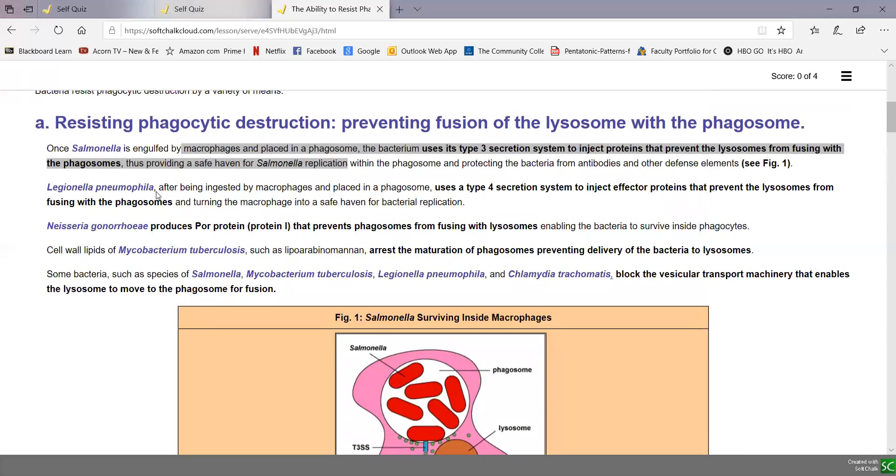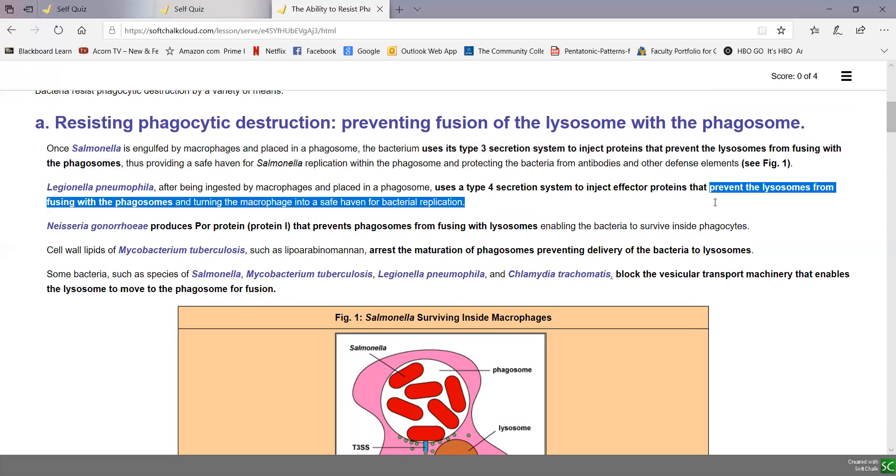Legionella pneumophila, the cause of Legionnaire's disease, also uses a secretion system to inject effector proteins that prevent lysosomes and phagosomes from fusing. Likewise, Neisseria gonorrhoeae produces pore proteins that prevent phagosomes from fusing.